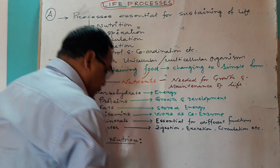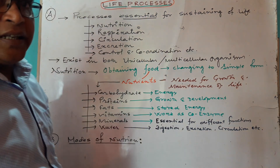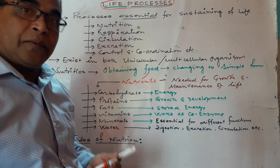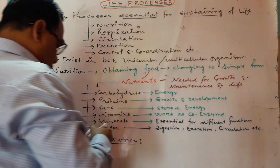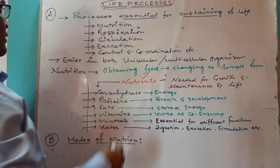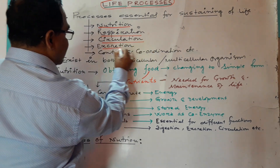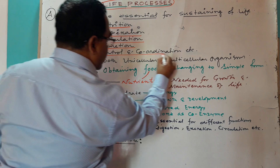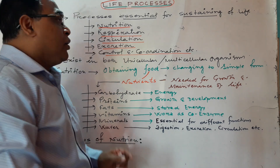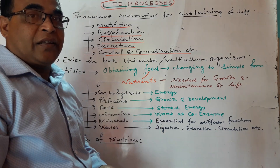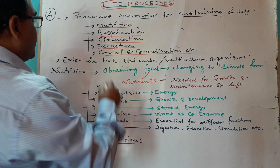What are life processes? Life processes means the essential processes sustaining life. These are very essential processes. What are these? The life processes which are very essential are nutrition, respiration, circulation, excretion, control and coordination, reproduction, growth and development, muscular movement — all of these are very essential processes for sustaining life.